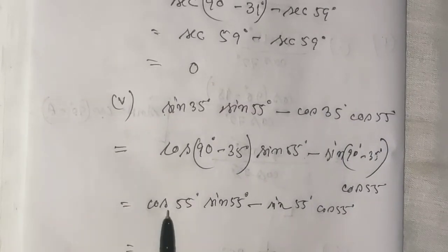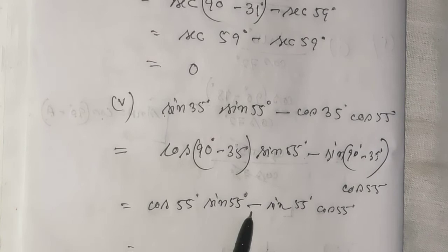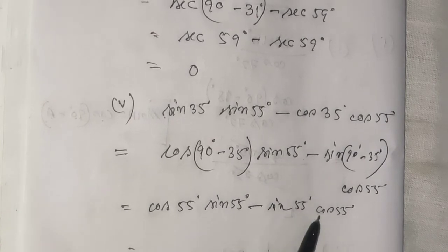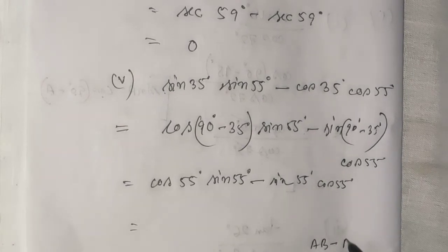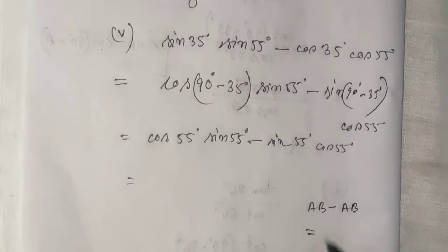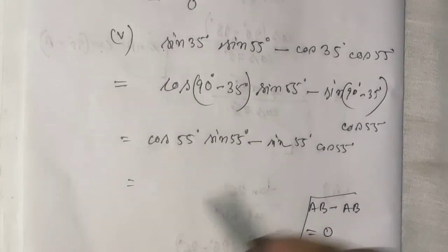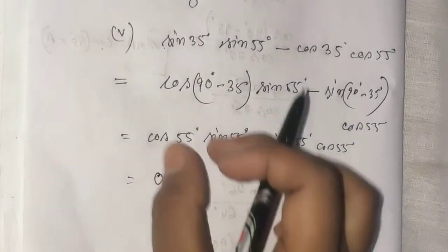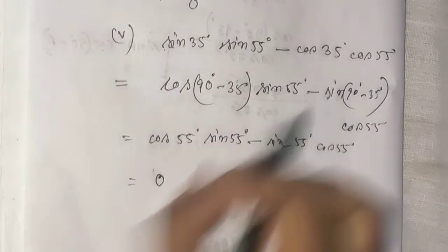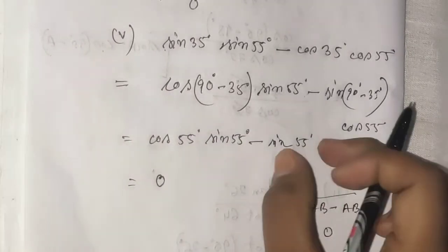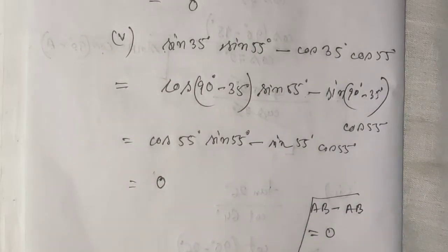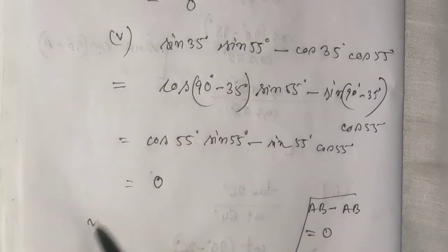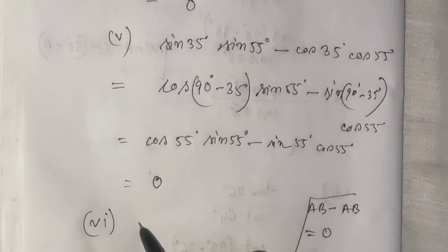We have: sin(θ) × sin(some degree) minus sin(50-something degree). This is of the form A minus A, which equals 0. The answer is zero.